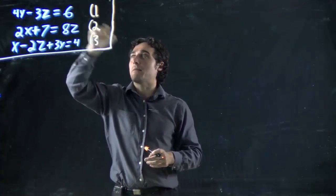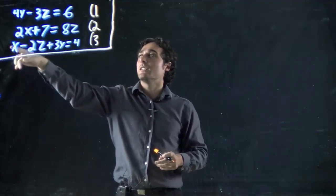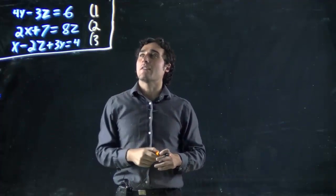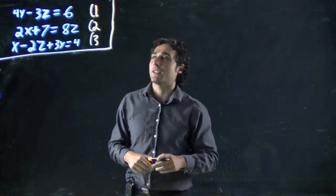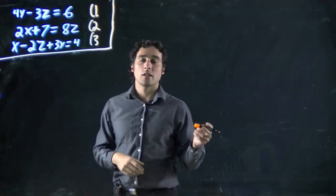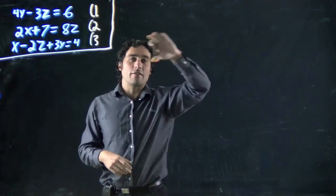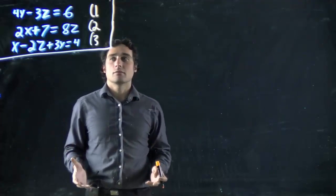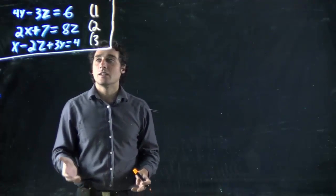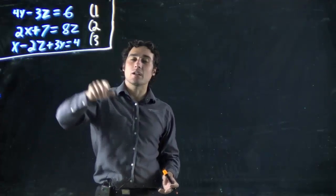Equation one: 4y minus 3z equals 6. Equation two: 2x plus 7 equals 8z. And three: x minus 2z plus 3y equals 4. I'm not going to write out all three equations at first, I'm going to write them one at a time as I need them. How are we even going to solve this?